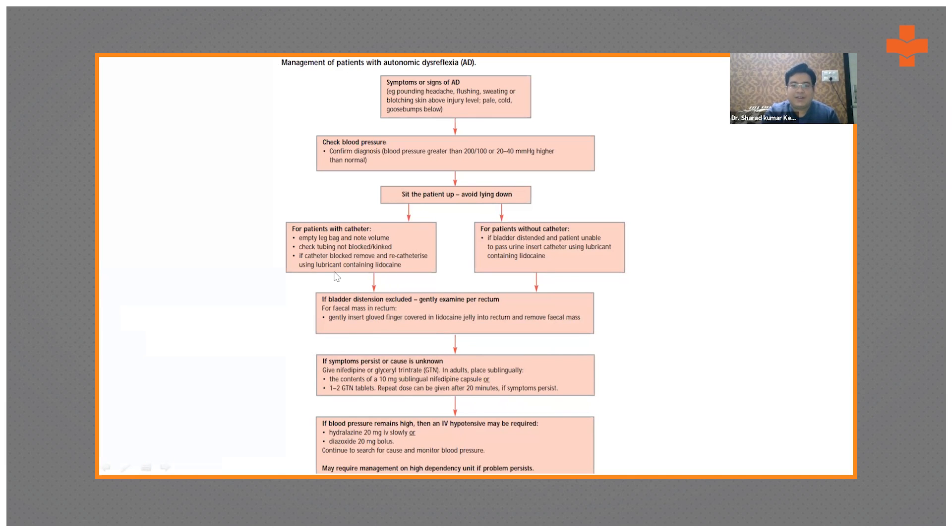Use lubricant containing lidocaine. If the patient is not having a catheter and the bladder is distended, quickly insert a Foley catheter using the lubricant containing lidocaine. Now if the bladder's distension is excluded, meaning the bladder is not the cause, examine PR.